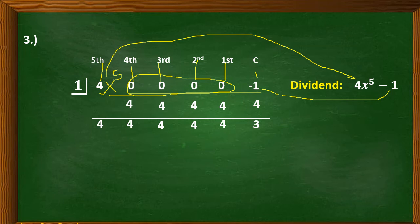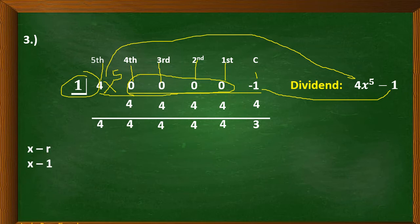For our divisor, this is the divisor part here. Follow the formula and substitute, so we have x minus 1 as our divisor.